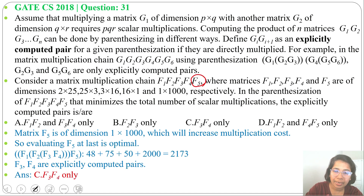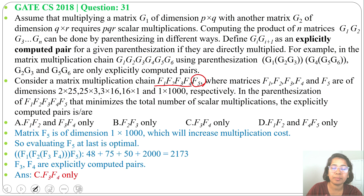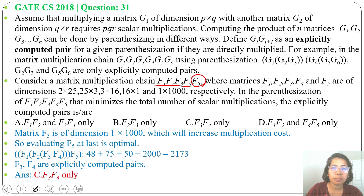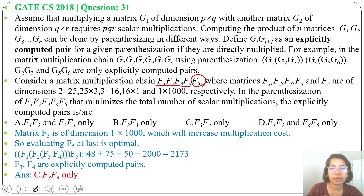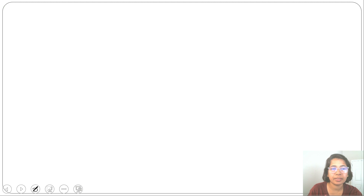After excluding F5, we have 4 matrices, and for 4 matrices there are 5 different parenthesizations. To find the minimum number of multiplications you need to check all 5. Using a trick, you can check just 2 parenthesizations. Now let's apply dynamic programming to find the optimal parenthesization.